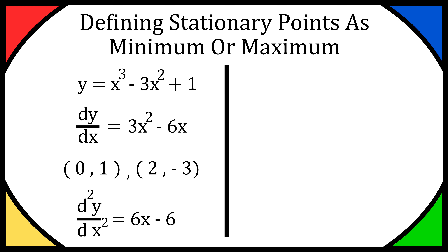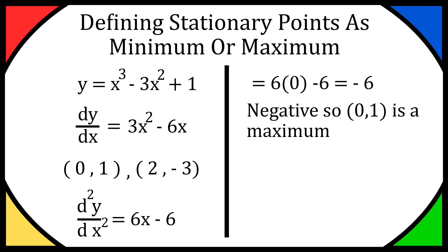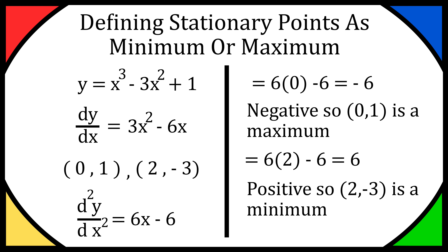From here we just sub in the x values from our stationary points. For our first stationary point (0, 1), x is 0: we get 6 times 0 minus 6, which equals minus 6. This value is negative, so (0, 1) is going to be a maximum. For our second stationary point (2, −3), we sub in 2: 6 times 2 minus 6 equals 6. This is a positive value, so (2, −3) is a minimum.